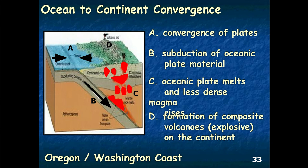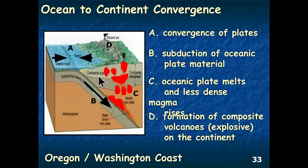At point B, the ocean plate moves beneath the continental plate — this process is called subduction. The ocean plate subducts beneath the continental plate because it is much more dense than the continental plate. By the laws of physics, heavier items sink and lighter items float, so the denser ocean plate subducts beneath the lighter continental plate.